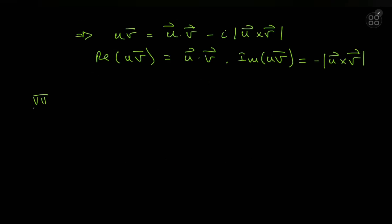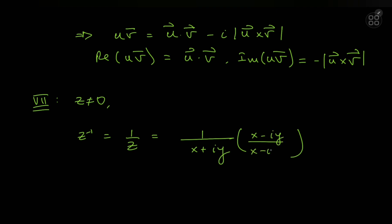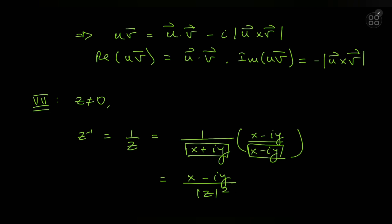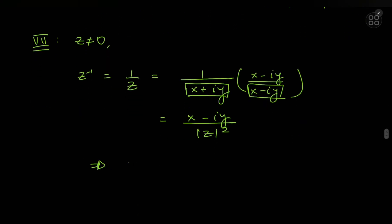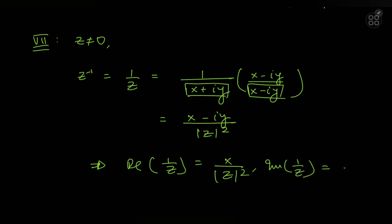Finally, property seven concerns the existence of multiplicative inverses. For any nonzero z, we define z⁻¹ = 1/z = 1/(x + iy). We separate this into real and imaginary parts by multiplying numerator and denominator by the conjugate (x − iy), giving (x − iy)/(z · z̄) = (x − iy)/|z|². So the real part of 1/z is the real part of z divided by |z|², and the imaginary part of 1/z is the negative of the imaginary part of z divided by |z|².